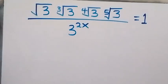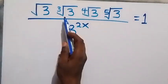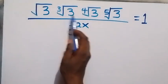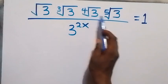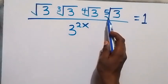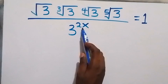Hello, you are welcome. How to solve a nice math problem involving roots. We have the square root of 3 times the cube root of 3 times the fourth root of 3 times the fifth root of 3, all divided by 3 raised to power 2x, equals 1.